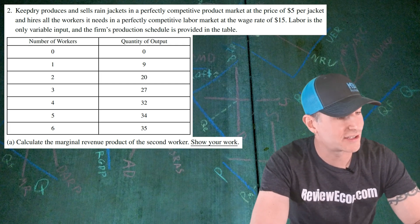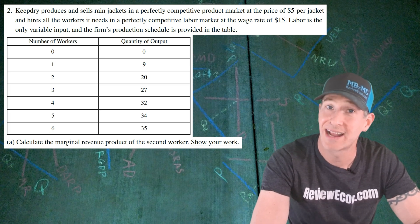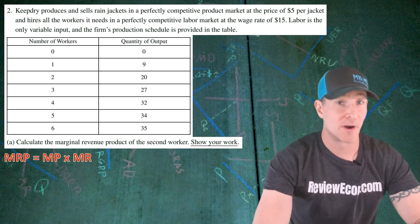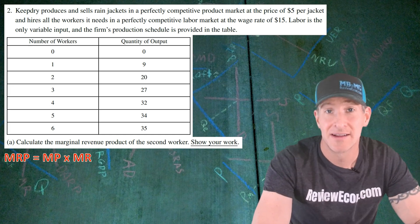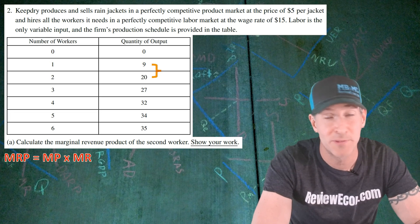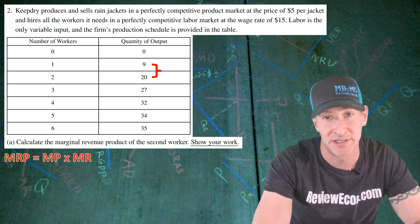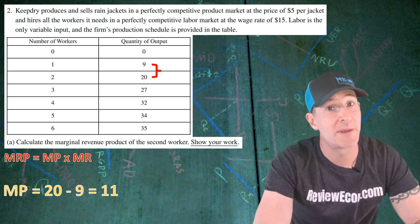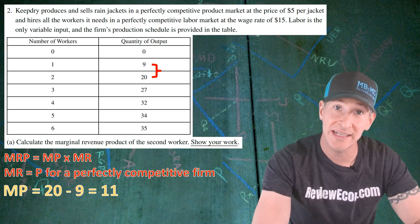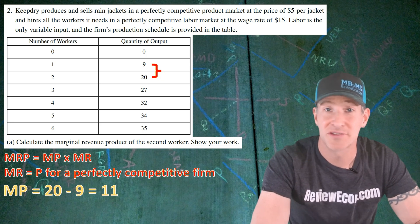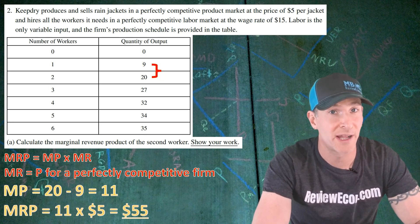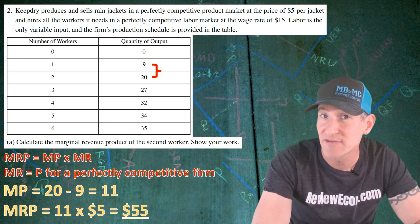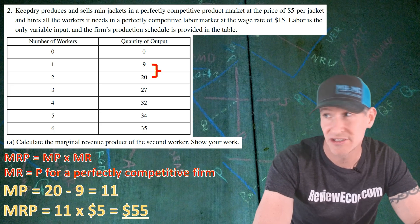For Part A, we have to calculate the marginal revenue product of the second worker and show our work. Remember, marginal revenue product is the marginal product times the marginal revenue. Marginal product is the change in total product. We can see that hiring the second worker changes the quantity of output from 9 units up to 20 units — a difference of 11 units of marginal product. The marginal revenue equals the price because price and marginal revenue are equal for perfectly competitive firms. So we take those 11 units of marginal product, multiply by the $5 price, and that gives us $55 of marginal revenue product for the second worker. If you have that math shown, you get your first point.